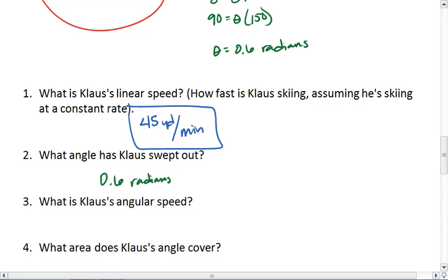Since Klaus sweeps out 0.6 radians in 2 minutes, that means his angular speed is 0.6 radians per 2 minutes, or 0.3 radians per minute. Do make sure to include units.